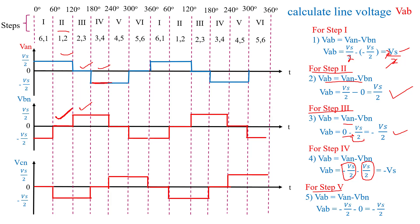For step 5, VAB equals minus Vs/2. For step 6, the same calculation is performed. In this way, we calculate the line voltage VAB across all six steps.